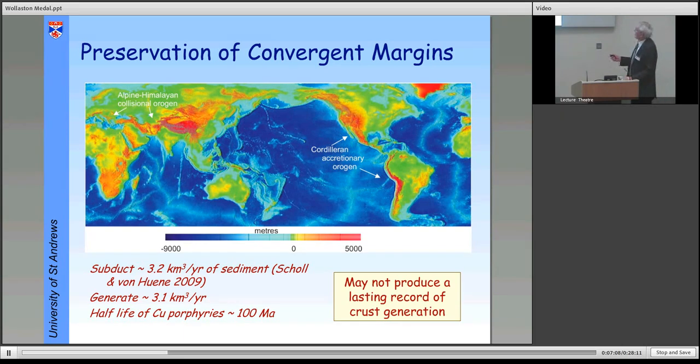And what this does is simply highlight that if we look at a convergent plate margin, what increasing numbers of people have argued - if you take active continental margins today, that you generate magma at 3.1 kilometer cube per year, of that kind of order, but you actually subduct sediment in approximately the same volume. So these sites that have lots of magma, lots of convergent plate margins, lots of subduction rate of magnetism, that would give us the signature of our continental crust, are actually destroying rock as fast as they're making it.